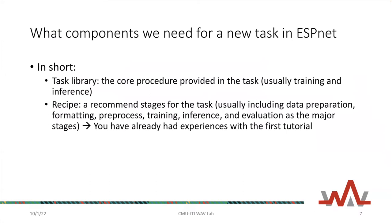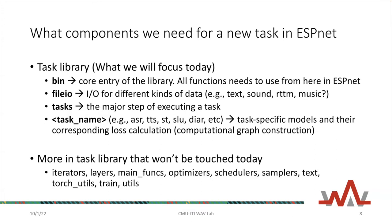What components do we need for new tasks in ESPNet? We have two main components: the task library, which is the core procedure for training and inference, and the recipe session with recommended stages including data preparation, formatting, preprocessing, training, inference, and evaluation. The task library has four major components: a binary folder as the main entry point, file I/O for input/output streams for different data types like tags, sounds, and RTTM format, plus task-specific modules.